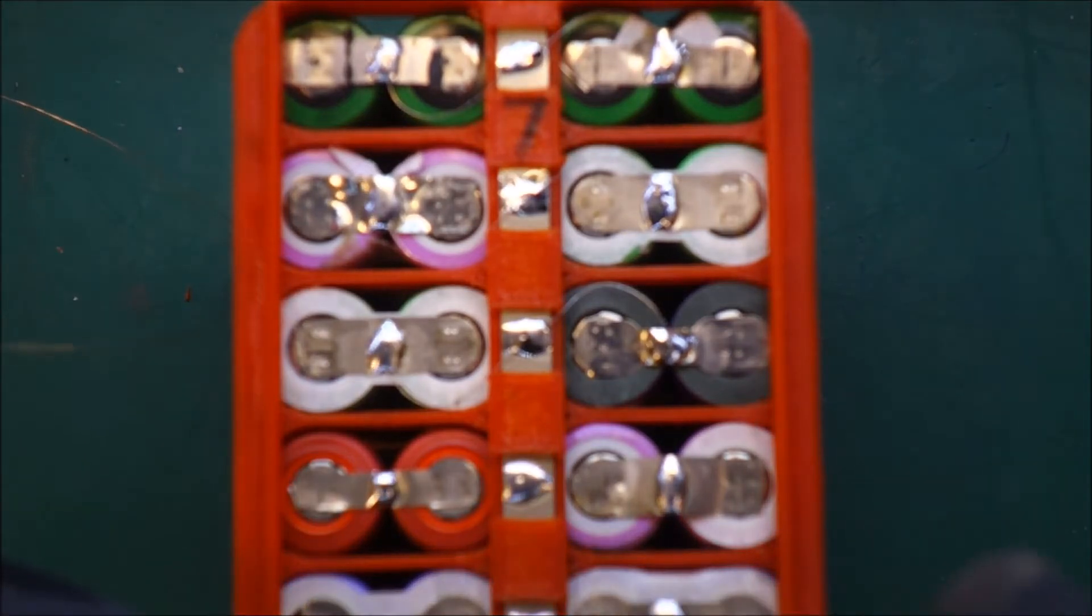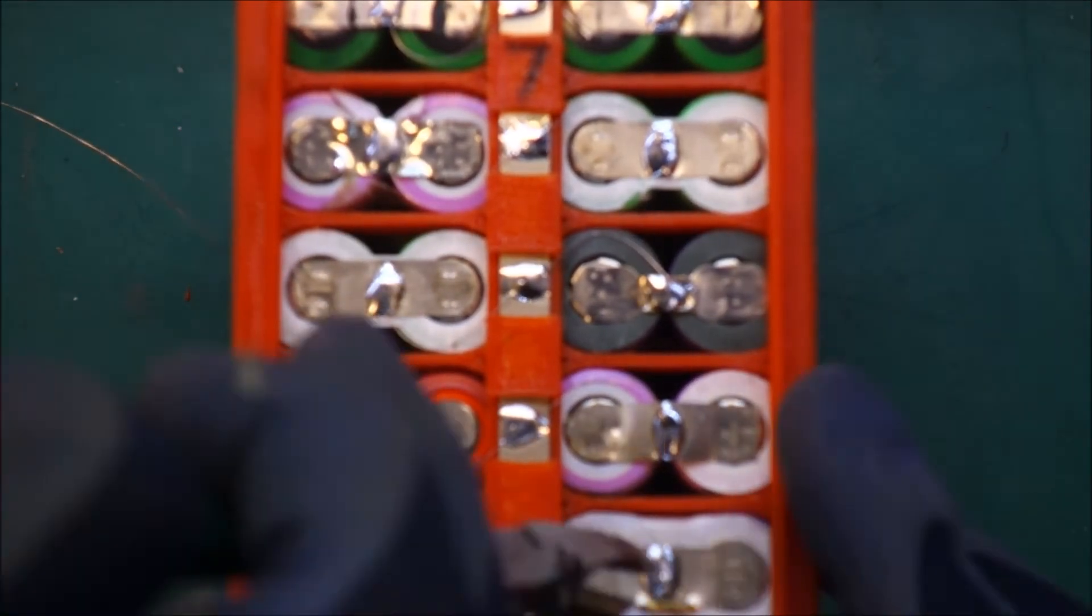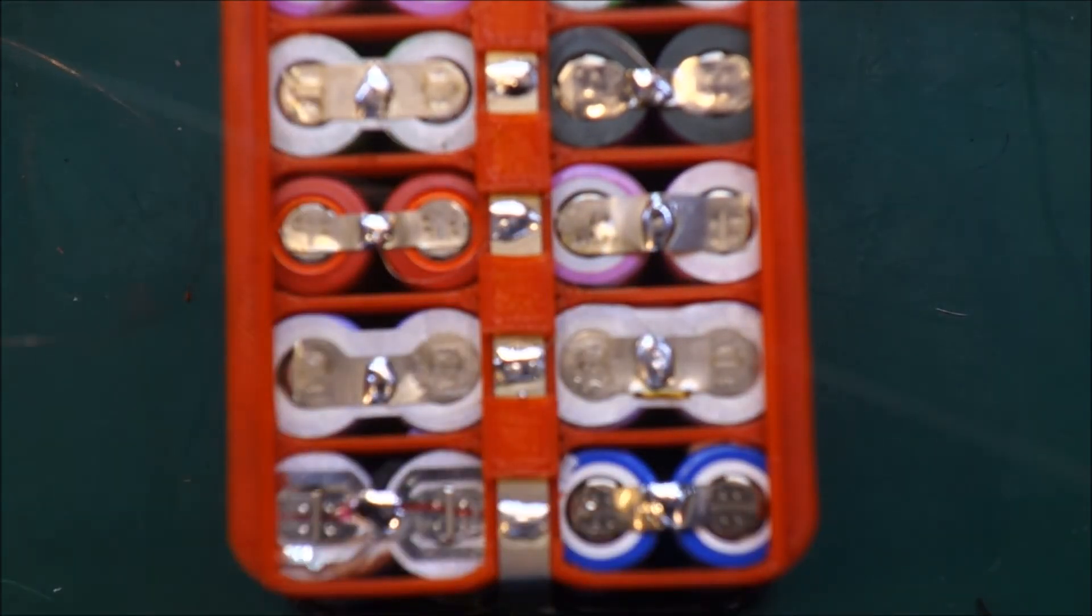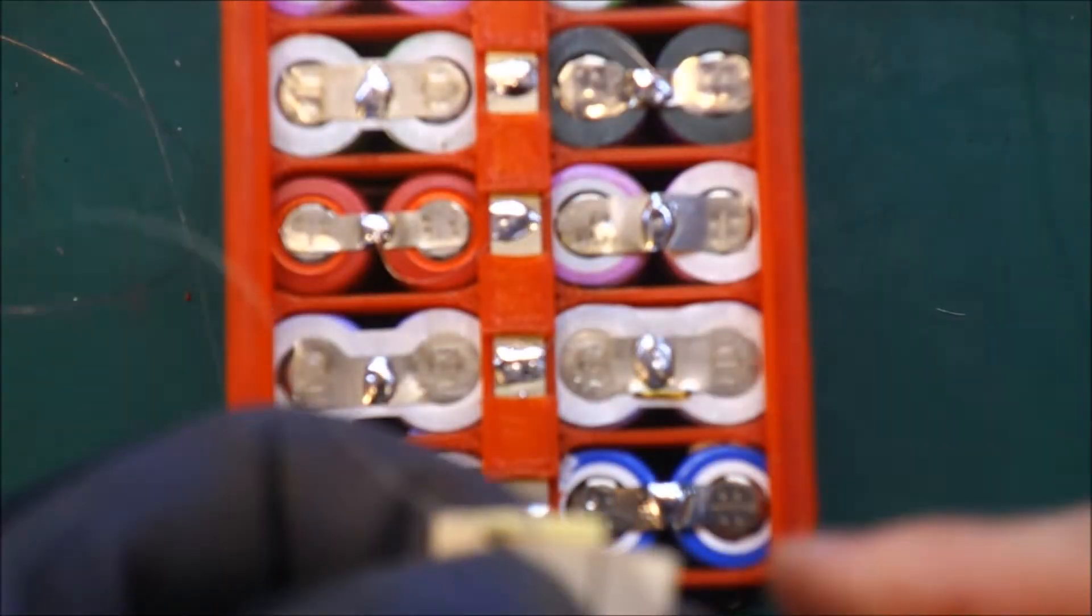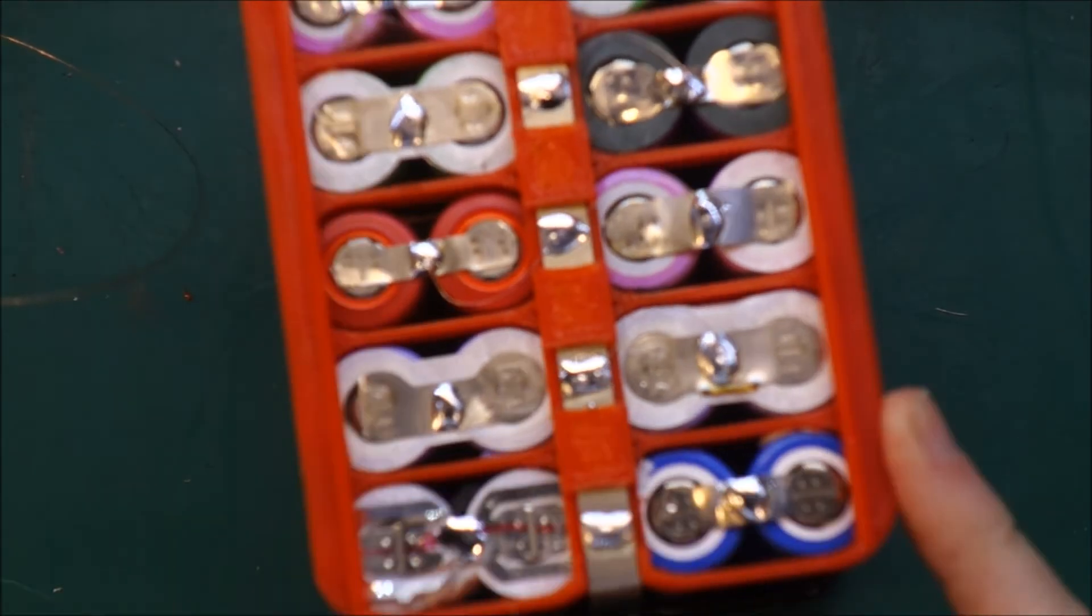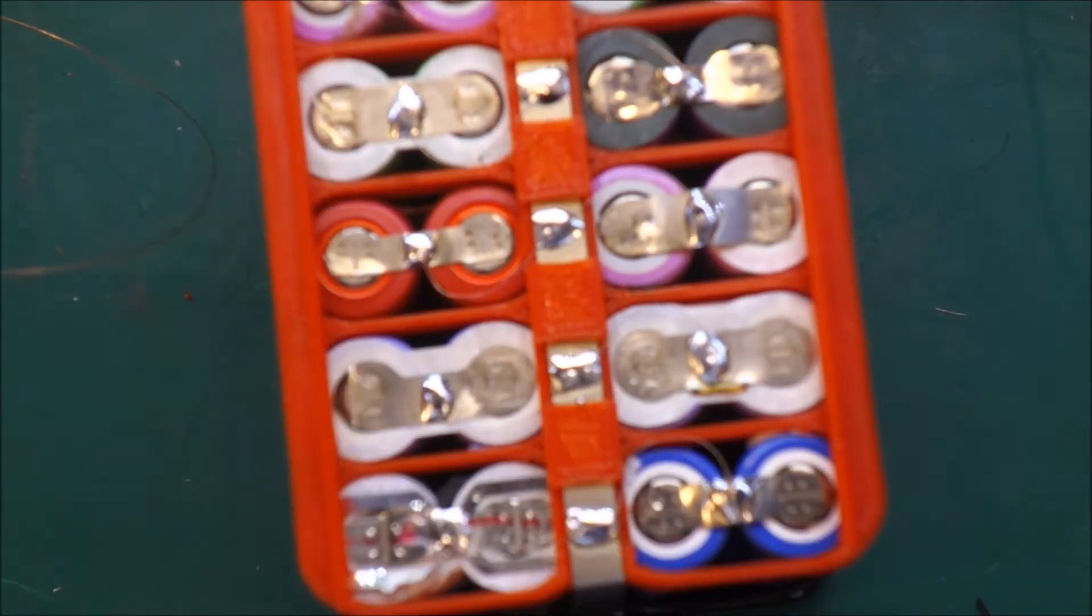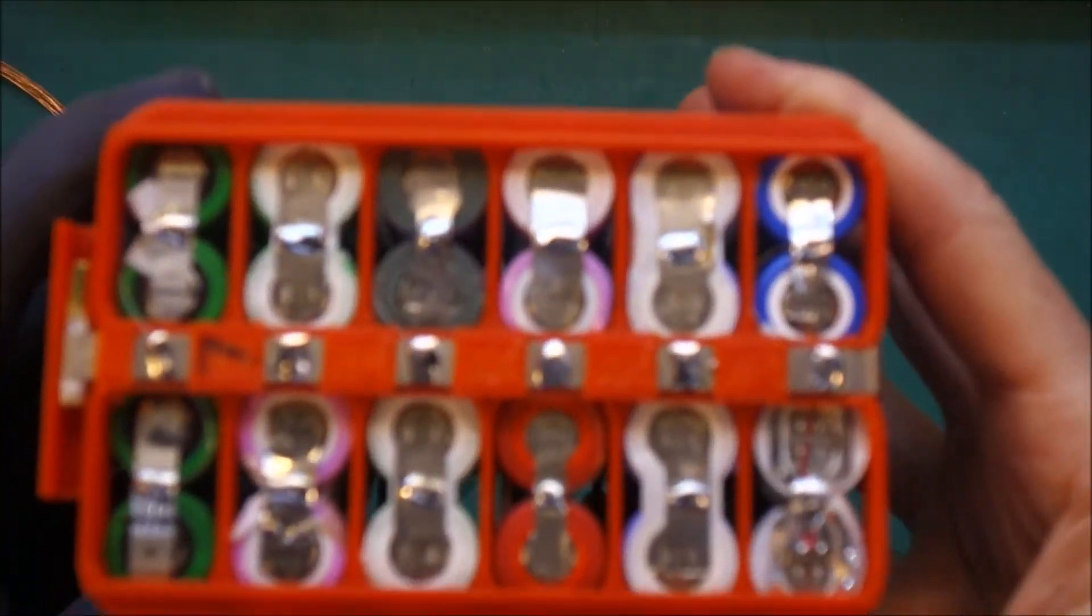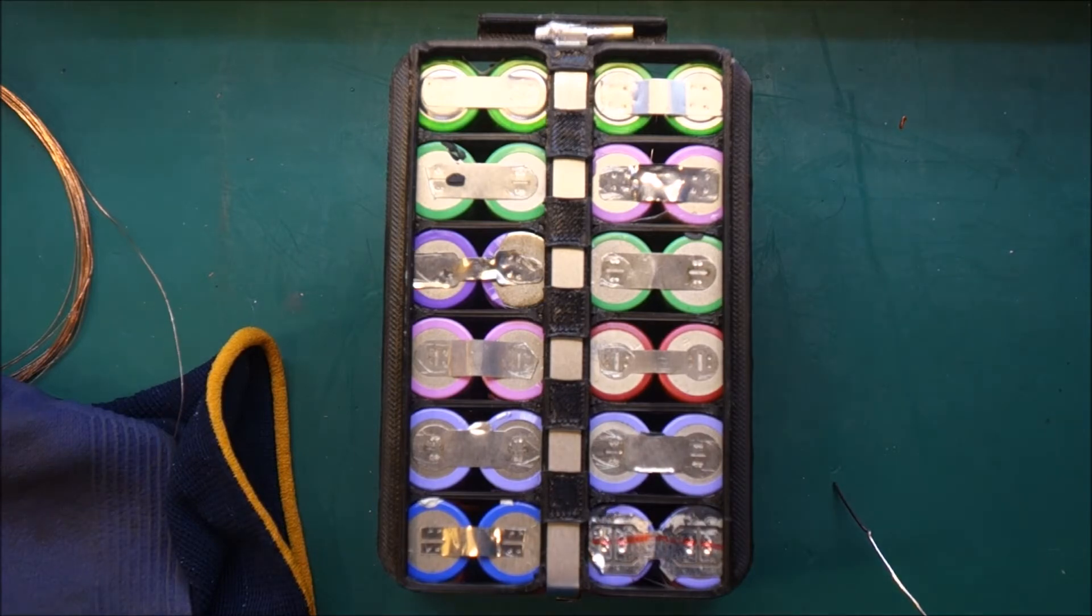So you could do the sandpaper trick on enamel wire as well, which would help. So that's one side done. That's all done. Let's do the other side. So switching to the thicker wire this time.